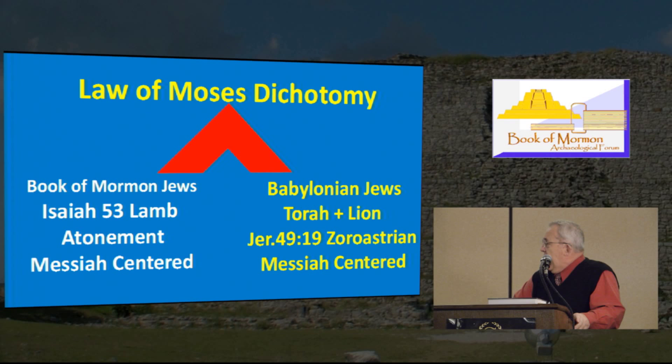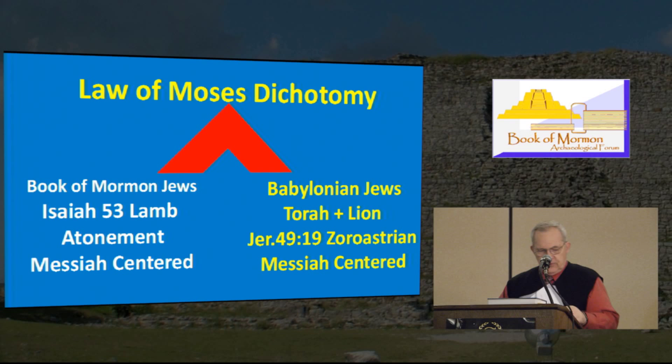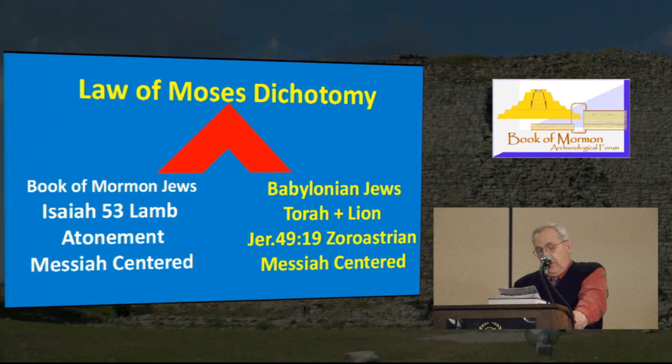This is the dichotomy: what happens with the Book of Mormon Jews — they're Isaiah 53-centered. Isaiah 53, verse 7: 'He was oppressed, he was afflicted, yet he opened not his mouth. He is brought as a lamb to the slaughter, and as a sheep before his shearers is dumb, so he opened not his mouth.' That's the concept of the Messiah as a lamb.